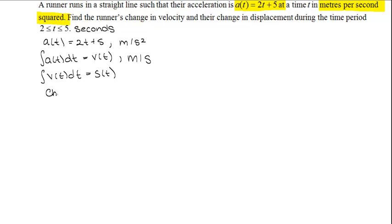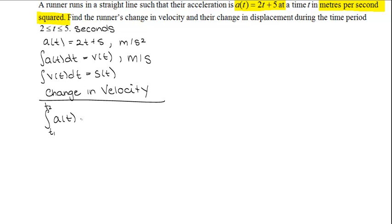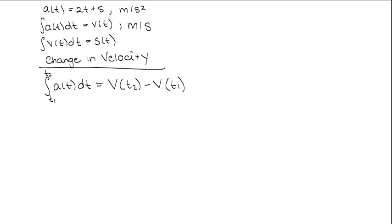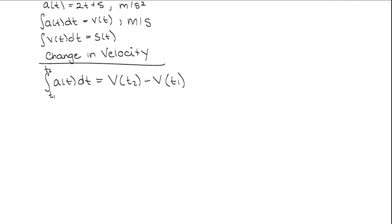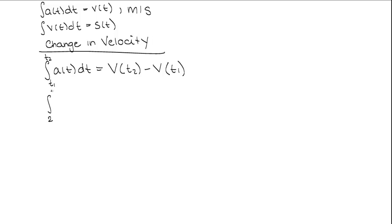Now we can start to find our change in velocity. The formula for change in velocity is the integral from t1 to t2 of acceleration dt, which equals velocity evaluated at time 2 minus velocity evaluated at time 1, because the integral of acceleration is equal to velocity. Our t2 is 5 seconds and our t1 is 2 seconds, so we integrate from 2 to 5 of 2t plus 5 dt.